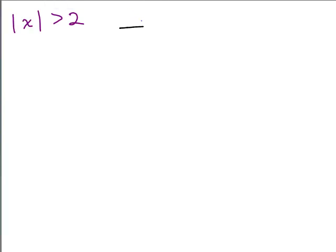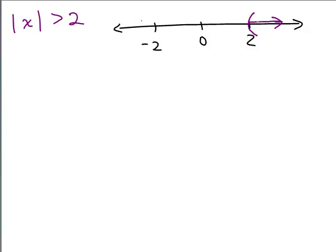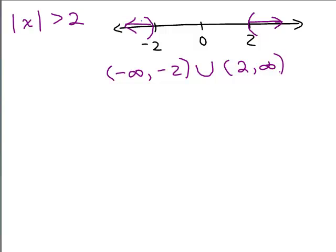Using the same reasoning for the absolute value of X is greater than 2: we want X to be more than 2 spaces away from 0 — strictly more than, so it can't touch 2. To the right we use a parenthesis at 2, and going 2 spaces to the left of 0 gives us some numbers over there too. So the solution in interval notation is negative infinity to negative 2, with a parenthesis, union 2 to infinity. Negative 2 itself is not a solution: putting negative 2 for X gives absolute value of 2, which is not bigger than 2.